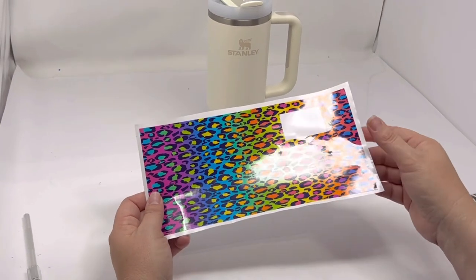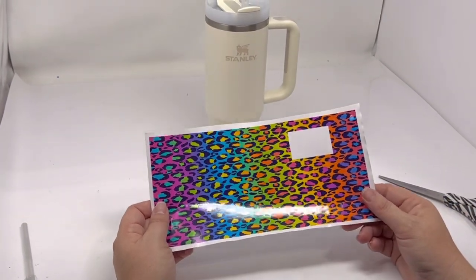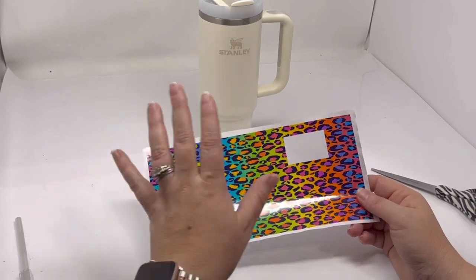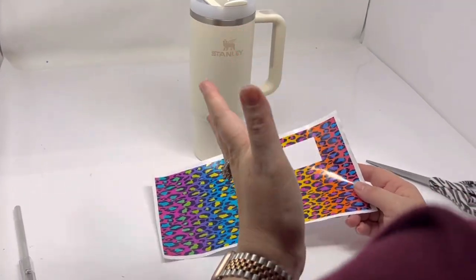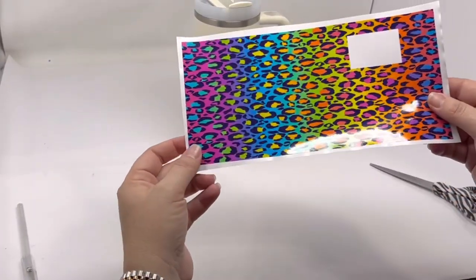All right everybody, today I'm going to show you guys how to use our new Stanley vinyl wraps that are pre-cut to fit your Stanley tumblers, so no more naked Stanleys. When you get them, this is how they will have the white edge on here.